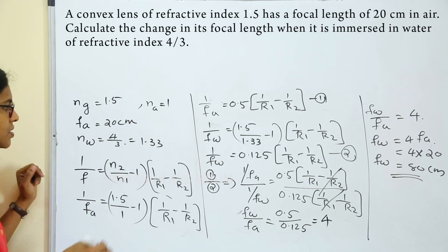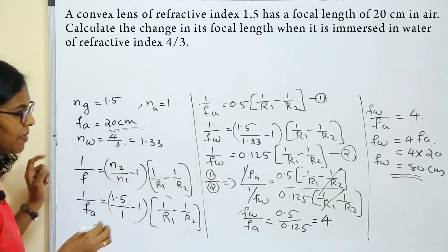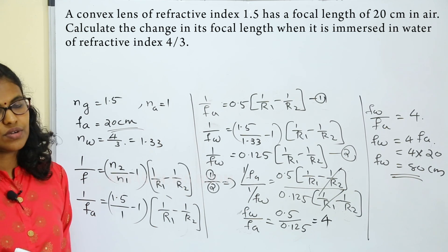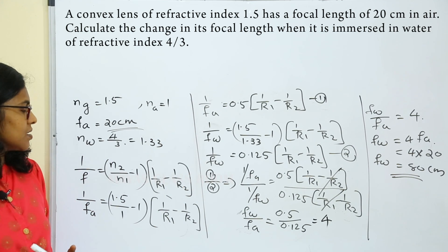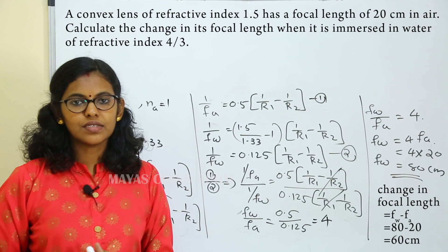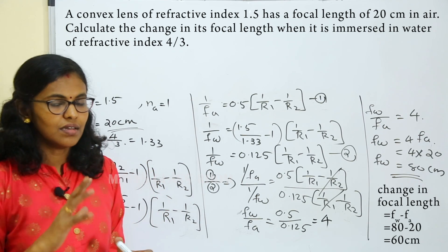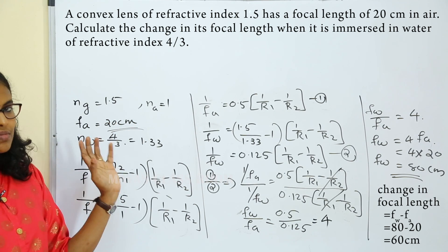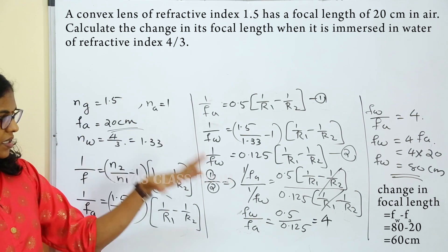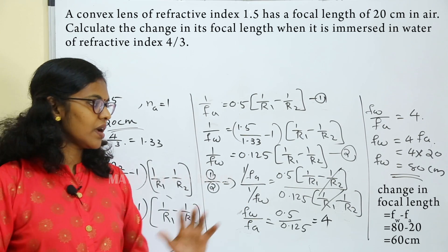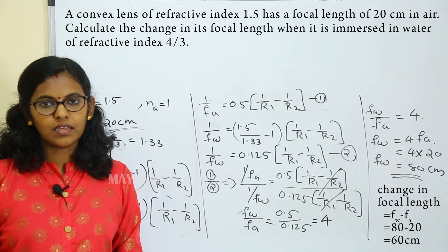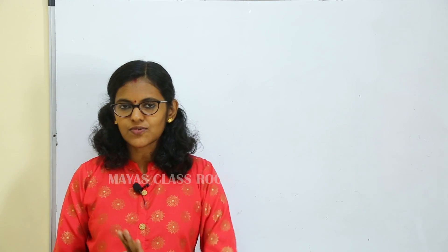Air focal length is 20 centimeters and water focal length is 80 centimeters, so the change in focal length is 60 centimeters. Do the questions in the chapter of Ray Optics — there are questions based on the lens maker's formula and prisms.